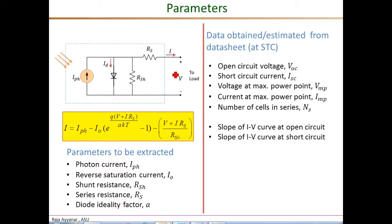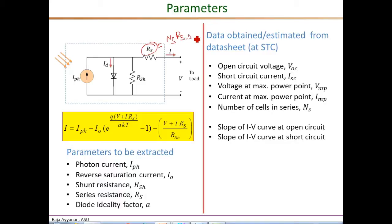The circuit model of a PV module is shown at the top. All the parameters correspond to the complete module which has multiple cells in series. For example, RS here corresponds to the series resistance of all the cells combined, equal to Ns — the number of cells in series — times the series resistance of a single PV cell.